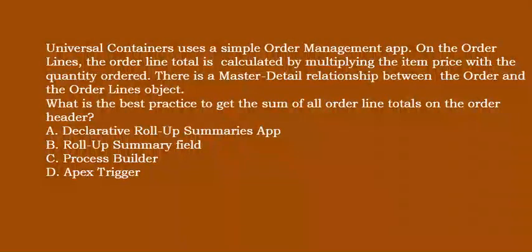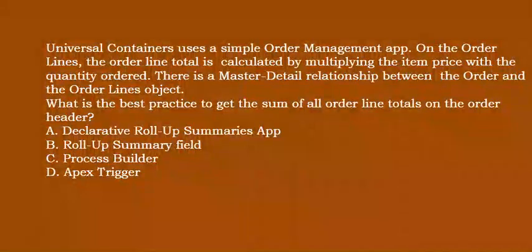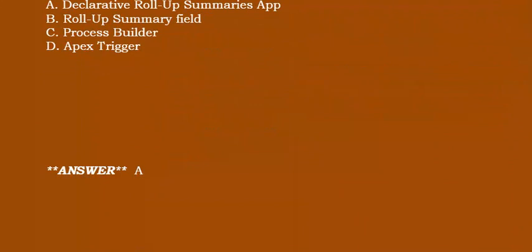Universal Containers uses a simple order management app. On the order lines, the order line total is calculated by multiplying the item price with the quantity ordered. There is a master detail relationship between the order and the order lines object. What is the best practice to get the sum of all order line totals on the order header? Option A: declarative roll-up summaries app. Option B: roll-up summary field. Option C: process builder. Option D: Apex trigger. Correct answer is Option A.